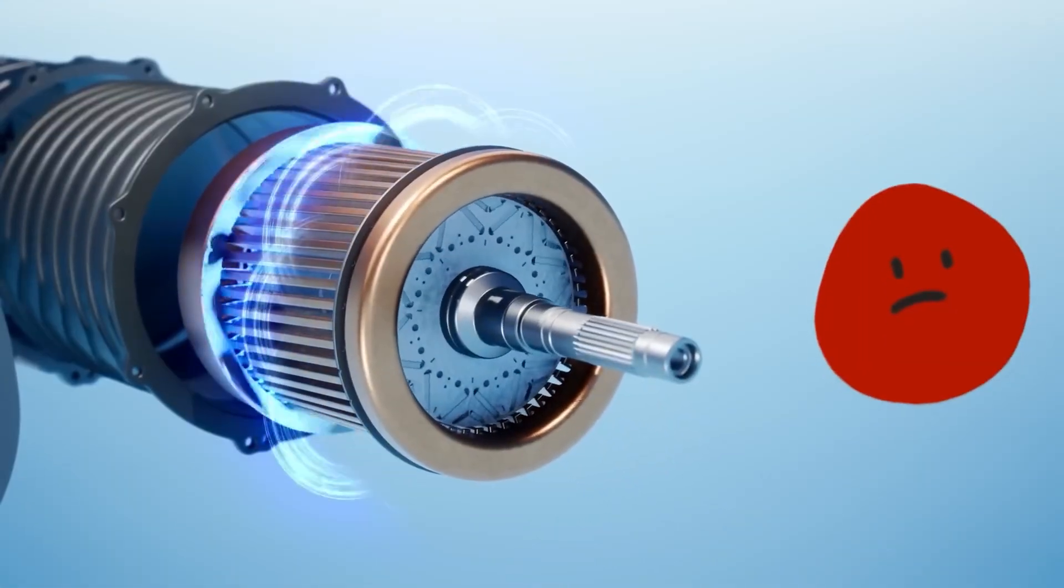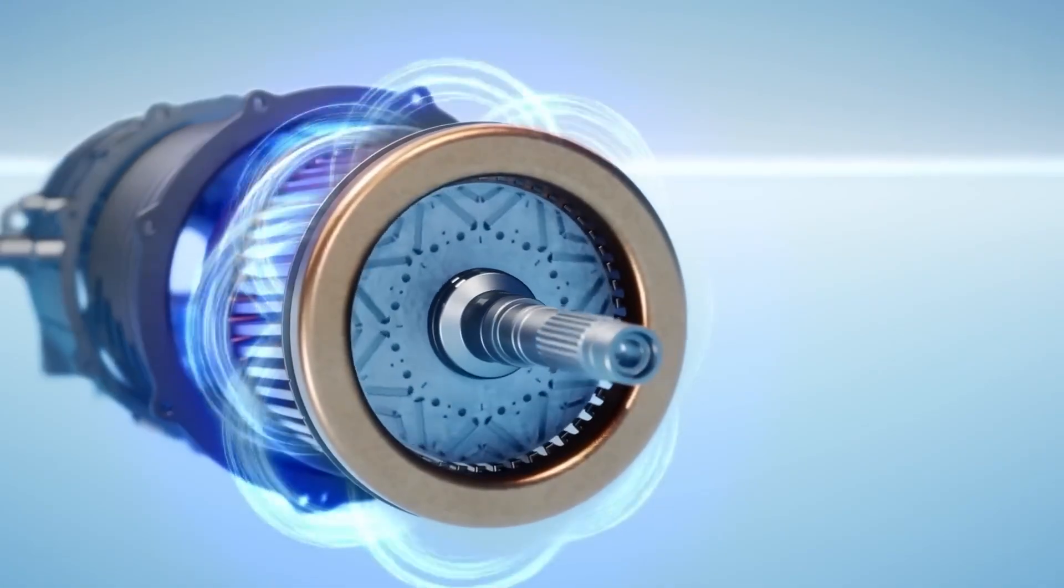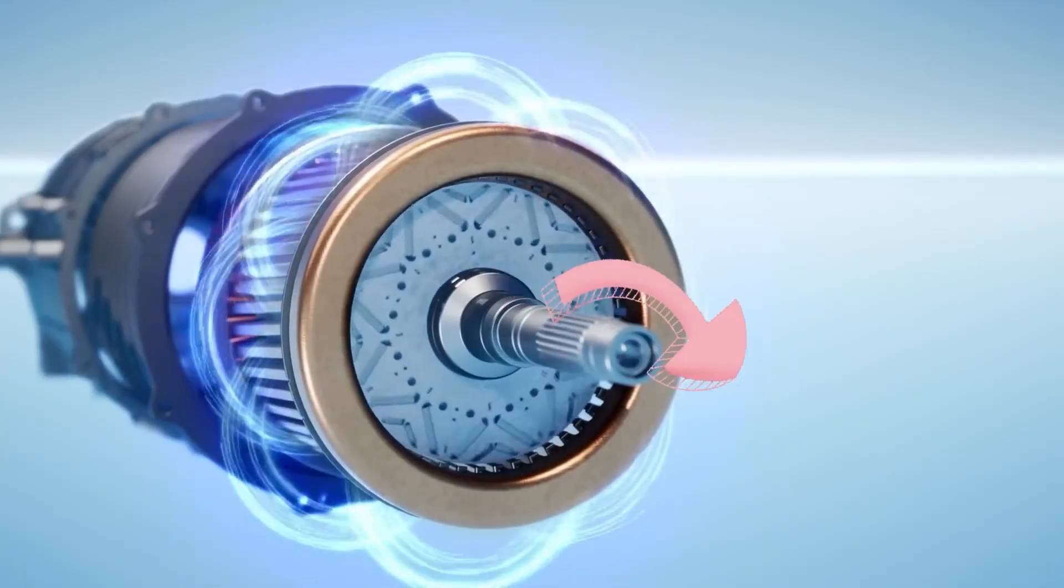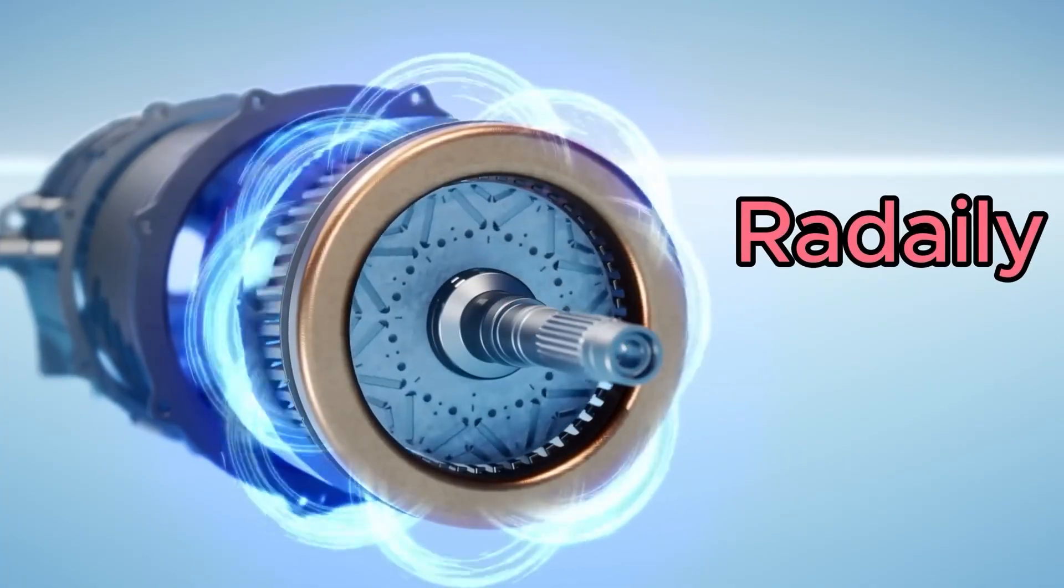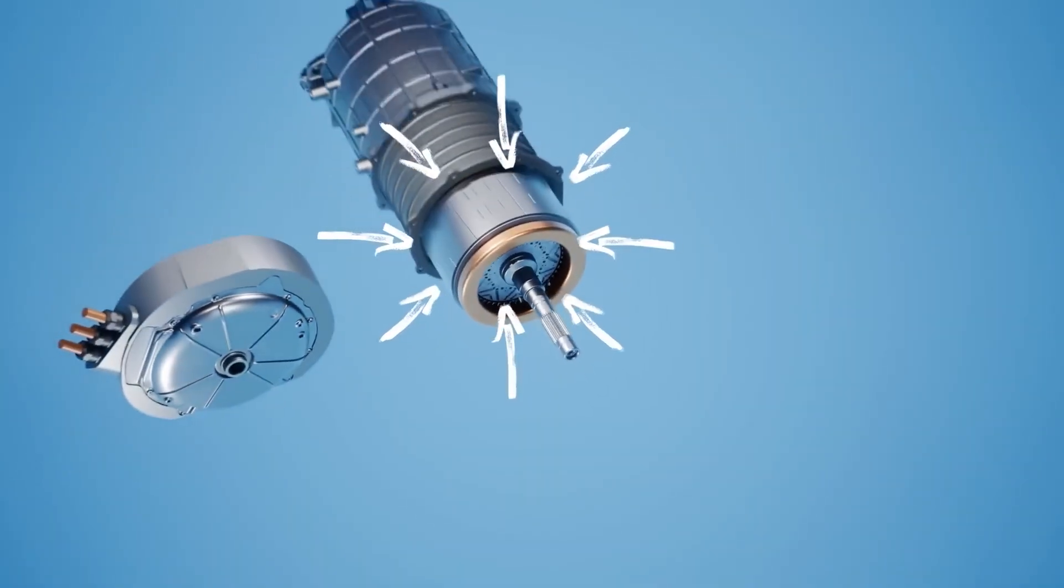If the windings bend or deform even slightly, the motor's efficiency drops, the rotor may rub against the stator, and the entire system becomes unreliable.